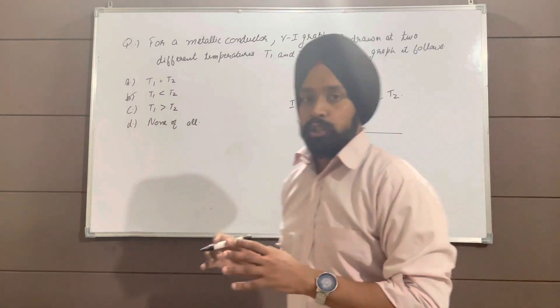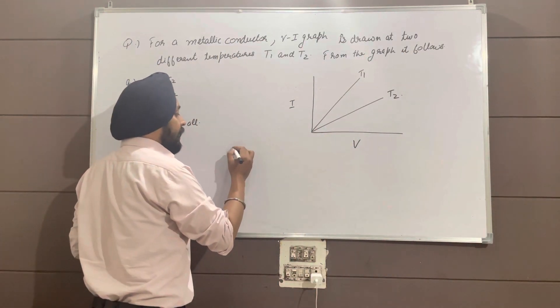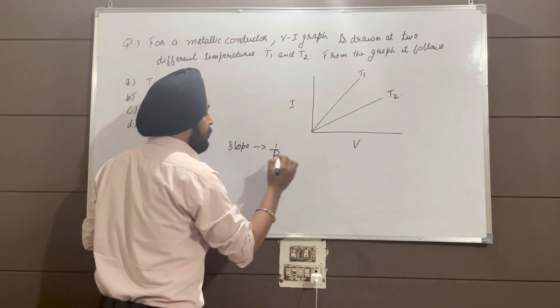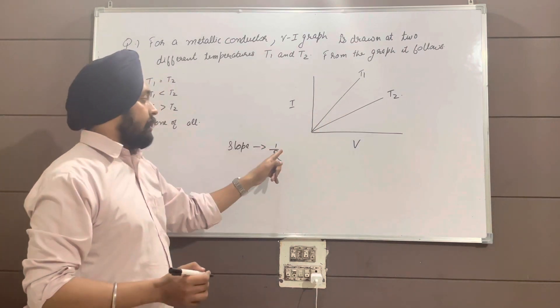Now, this VI graph, I must say, its slope gives one over resistance. So more the slope, lesser is the resistance. More the reciprocal of resistance.